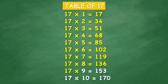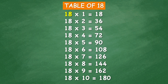17 times 8 equals 136, 17 times 9 equals 153, 17 times 10 equals 170. Table of 18: 18 times 1 equals 18, 18 times 2 equals 36, 18 times 3 equals 54, 18 times 4 equals 72, 18 times 5 equals 90, 18 times 6 equals 108, 18 times 7 equals 126, 18 times 8 equals 144, 18 times 9 equals 162.